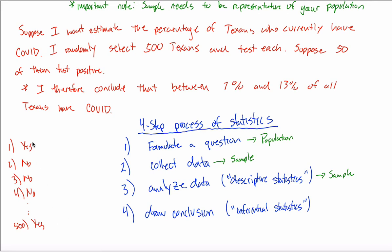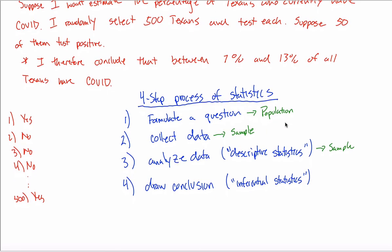You're taking this group of 500 yeses and nos, and you're summarizing it, analyzing it, performing descriptive statistics. Maybe it's simple, maybe it's just figuring out the 10% said yes. Maybe it's really complicated, and you're calculating interquartile ranges and standard deviations, terms that you'll learn as this class goes on. You analyze this sample data, and then you draw your conclusion.